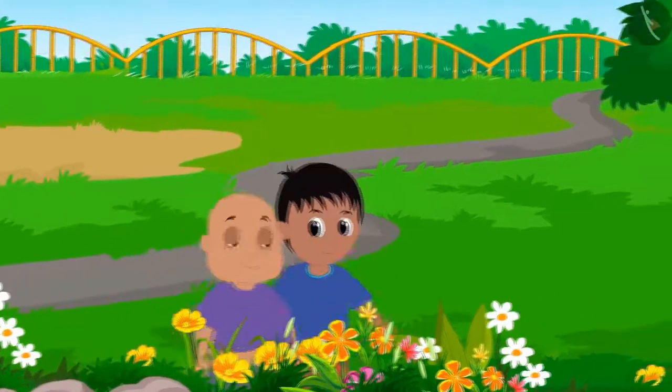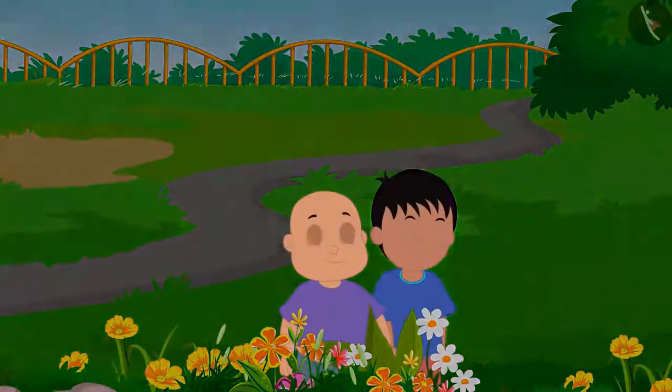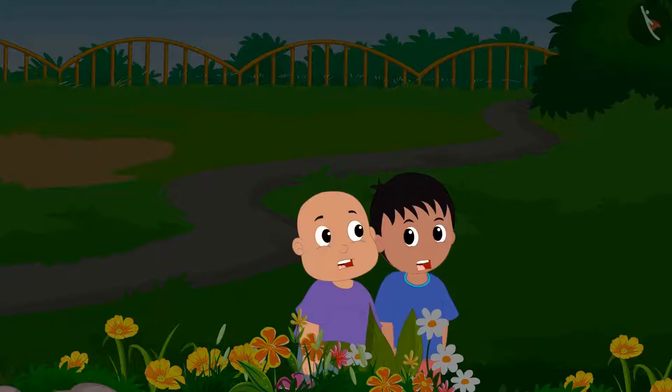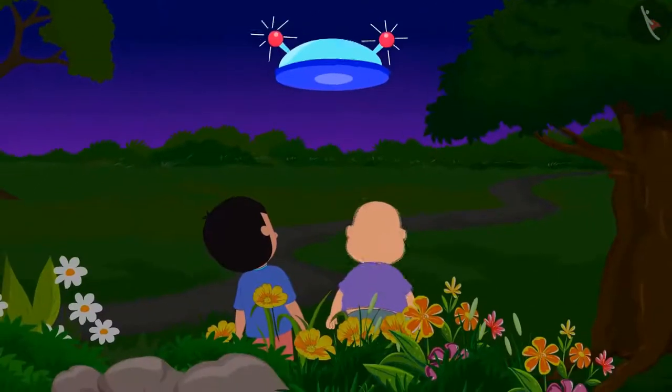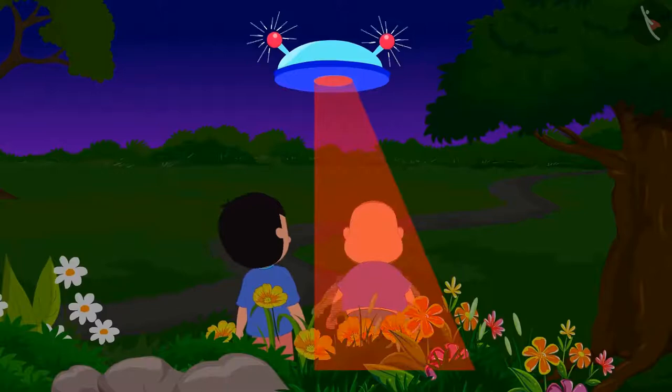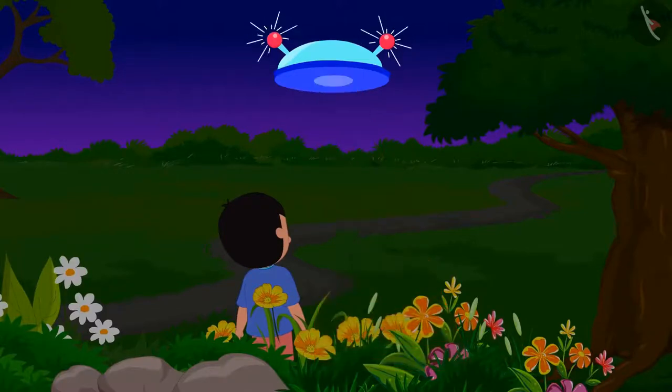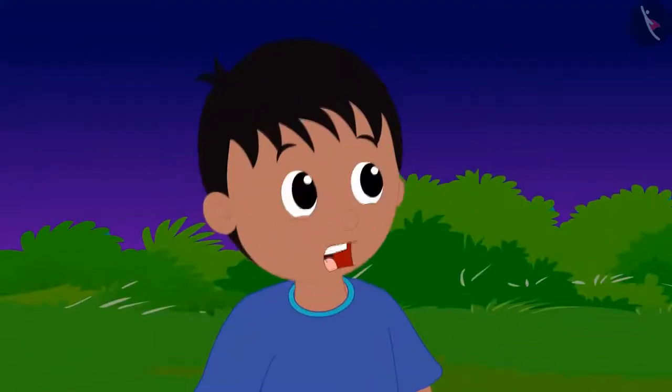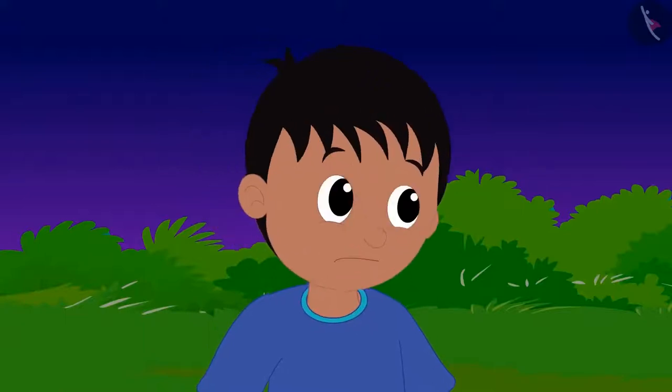Raju and Bablu are walking in the park. Hey, how did it suddenly become dark? Look, Bablu is being pulled into that flying saucer. Raju is shocked. He is unable to do anything.